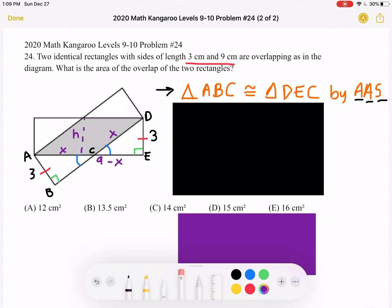So now, I have marked the base of the overlap area as X. If that's X, then CE must be 9 minus X, because the entire length AE is 9, as given in the problem.